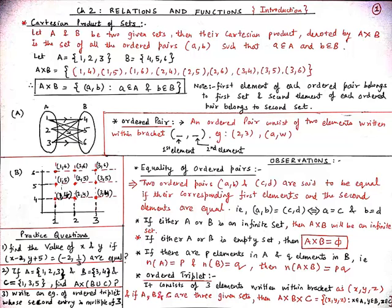And our fourth observation is if there are P elements in set A and Q elements in set B, that is number of elements in set A, which is N(A) = P and number of elements in set B, which is N(B) = Q, then the total number of elements in A×B, that is N(A×B) will be equal to P×Q.